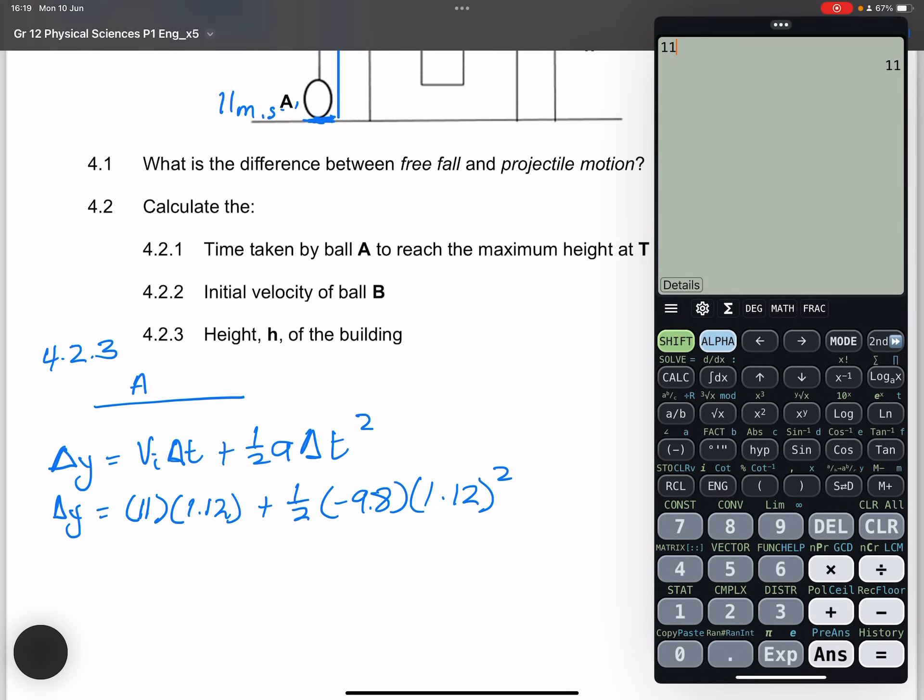So let's find that total displacement there for A. So that's 1.12 minus 0.5 so I'm just multiplying by negative there times 9.8 times 1.12 squared. So we find our displacement to be 6.17 meters. So that is the height for ball A.